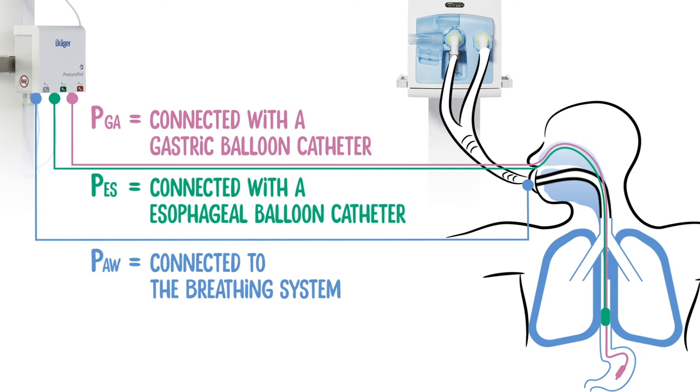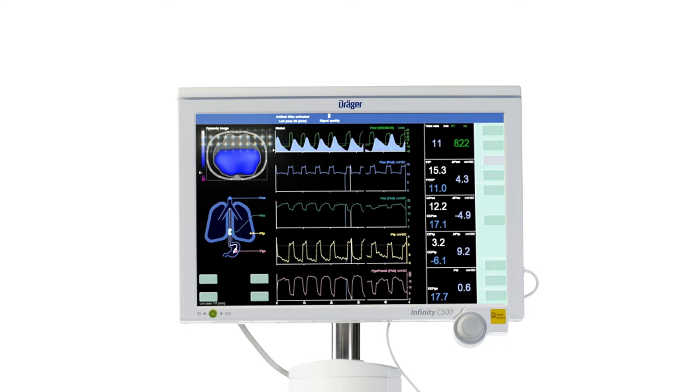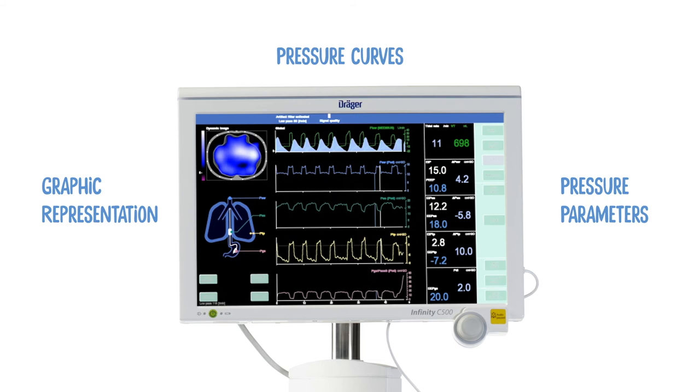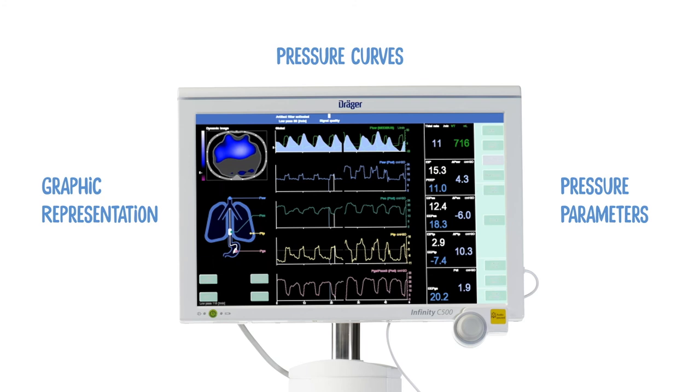In the new PTP analysis view of the Pulmo Vista you have the regional ventilation distribution displayed together with the pressure curves and parameters simultaneously in one view, complemented by several analyzing options.